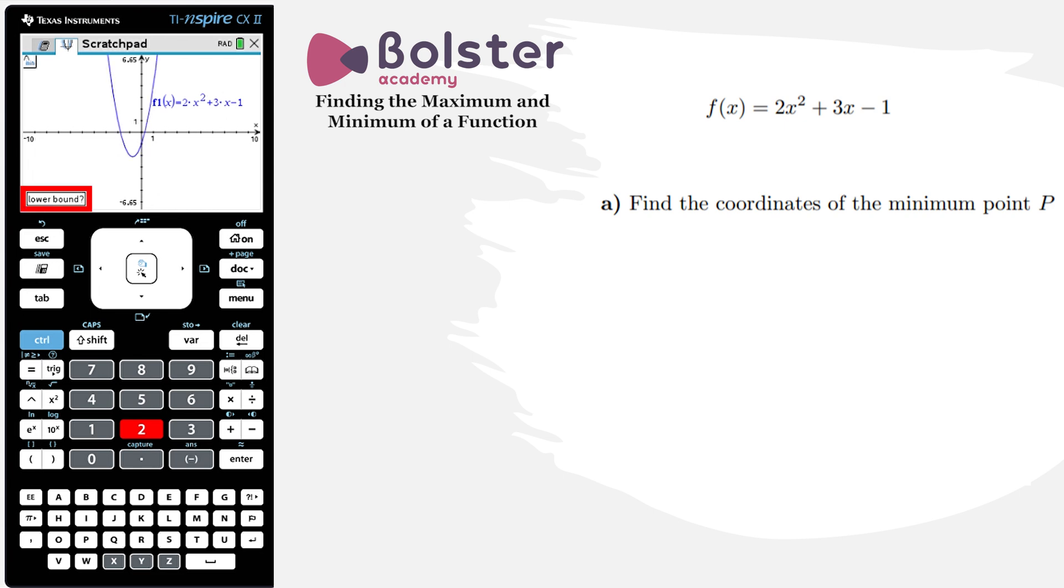It's asking me for a lower bound, so basically it's asking where do you want me to search for this minimum because there could be multiple local minimums on the graph.